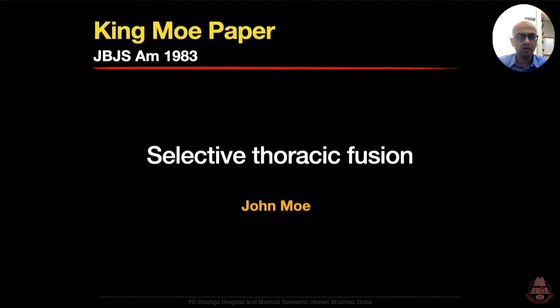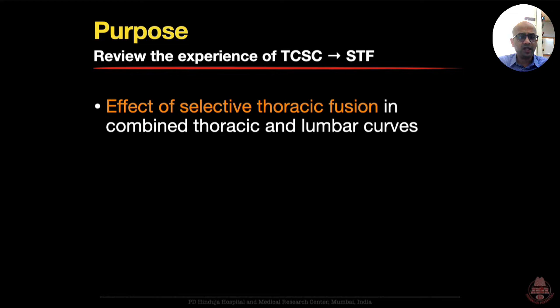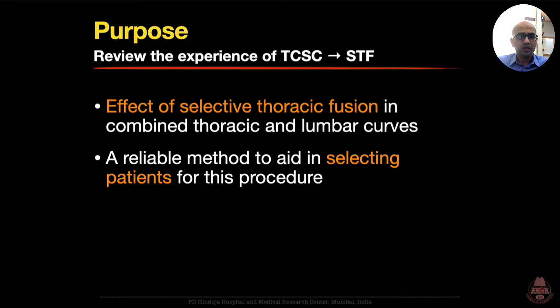In accordance with this philosophy, in patients with combined thoracic and lumbar curves in whom correction of the lumbar curve was greater than the thoracic curve on side bending, he had advocated selective thoracic fusion of only the upper curve. These guidelines were being followed by the Twin Cities group for 25 years. The purpose of this paper was to review the experience of the Twin City Scoliosis group and study the effect of selective thoracic fusion in combined thoracic and lumbar curves.